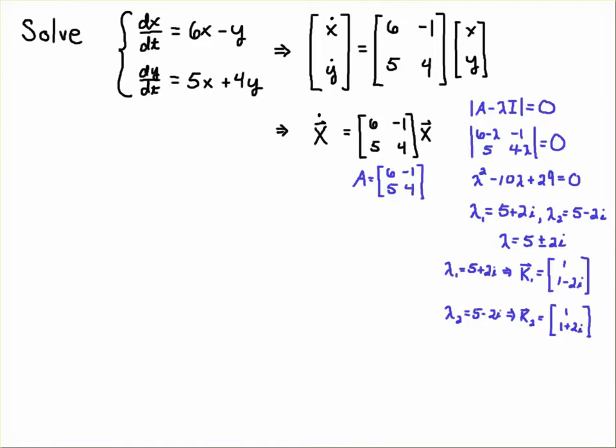Likewise, if you find the eigenvectors for lambda 1 equals 5 plus 2i, you get the eigenvector [1, 1 minus 2i], and then the other eigenvector is just going to be the